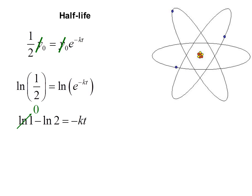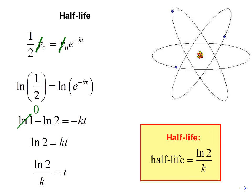But the natural log of 1 is 0. Then canceling the negative signs, we get ln 2 equals kt. Or ln 2 over k equals t. So we can find half-life by using the equation half-life equals ln 2 over k.